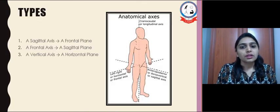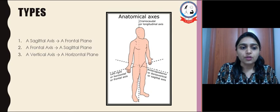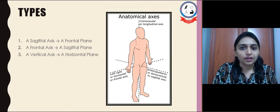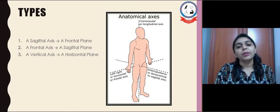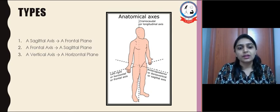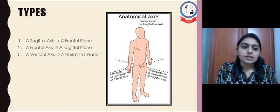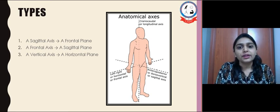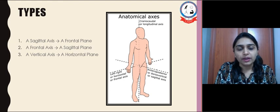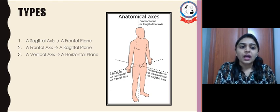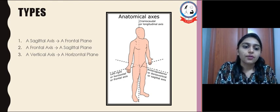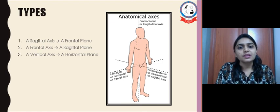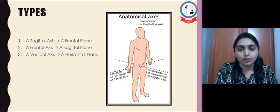Here are the types of axes and planes. One is the sagittal axis, and perpendicular to it is the frontal plane. Second is the frontal axis, and perpendicular to it is the sagittal plane. And the vertical axis, which is perpendicular to it, corresponds to the horizontal plane.